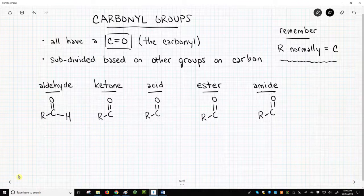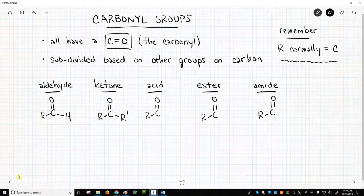If the carbonyl is attached to two R groups, say R and R prime, then the functional group is called a ketone.